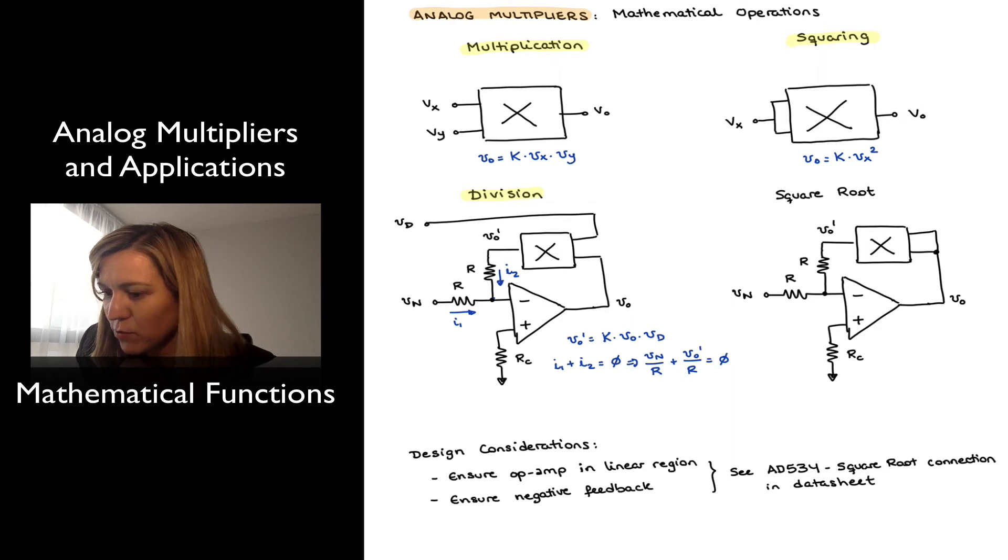I can eliminate the r's, multiply both sides of the equation times r, and solve for vn, and I have that vn is equal to negative vout prime.